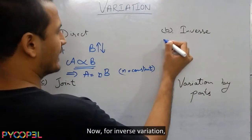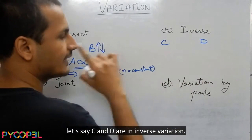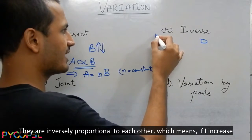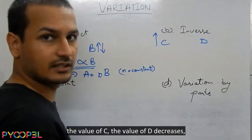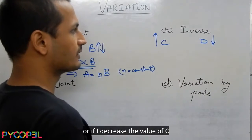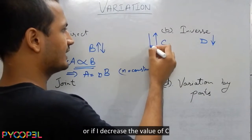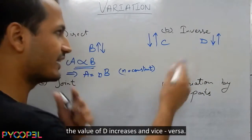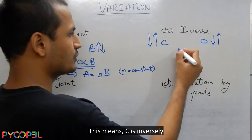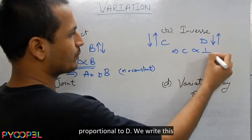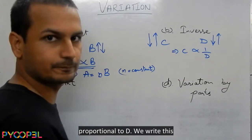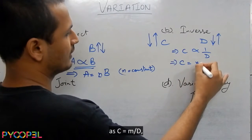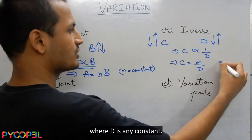For inverse variation, let us say C and D are inversely proportional to each other, which means if I increase the value of C, the value of D decreases, and vice versa. This means that C is inversely proportional to D. We write this as C = M/D, where M is a constant.